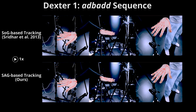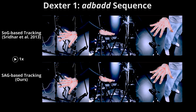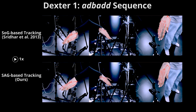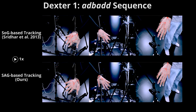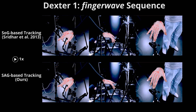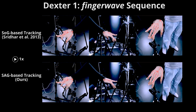We evaluate our method on the publicly available Dexter1 dataset. Here we show qualitative results from this dataset. Our method tracks hand motions better than existing work on these challenging examples because the anisotropic gaussians better approximate the volume of the hand. Please see the paper for quantitative comparison of the two methods.